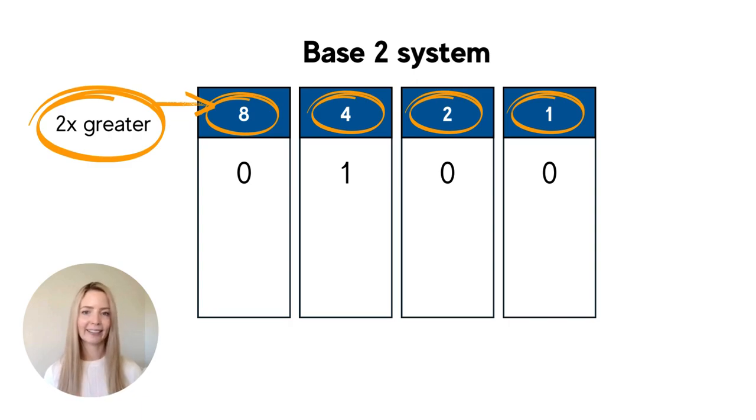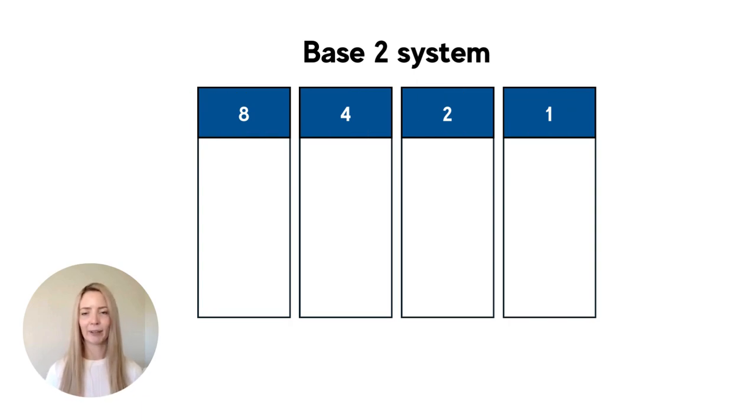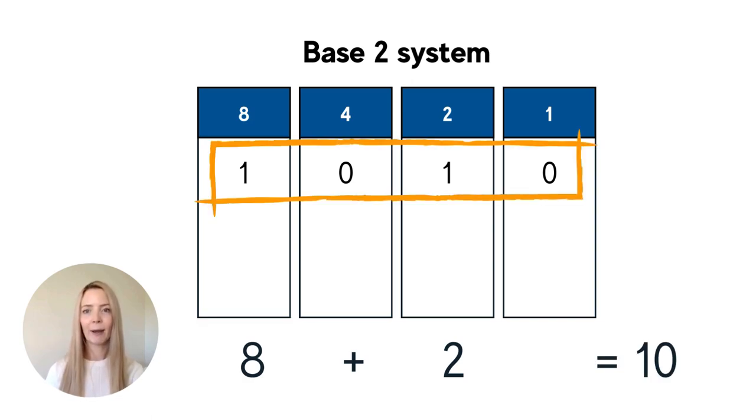Let's work one out together. We have the binary number one zero one zero. Let's look at our columns. We have a one in the eight column. So we have an eight and then we have another one in the twos column. So we add eight plus two and we have 10. The binary number for 10 is one zero one zero.